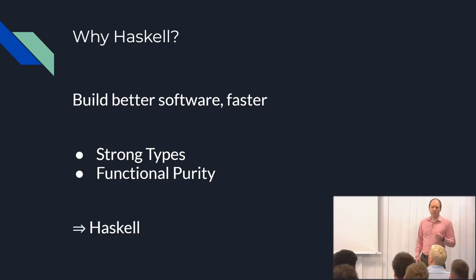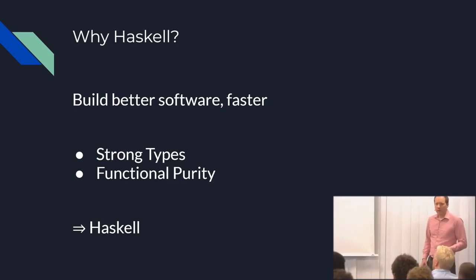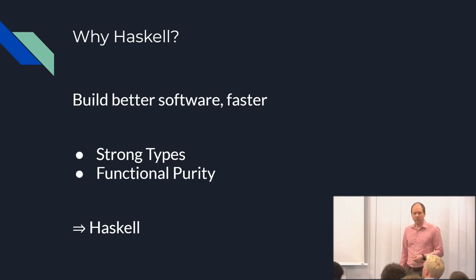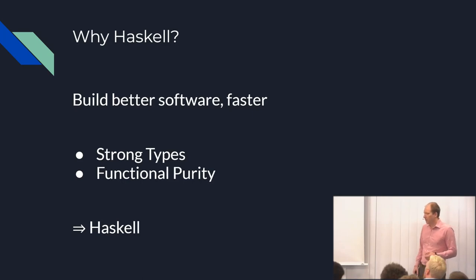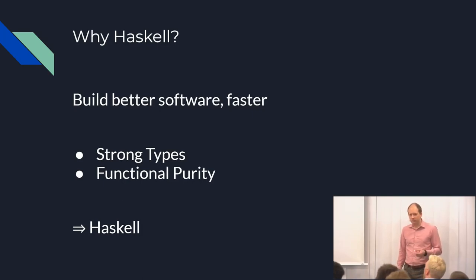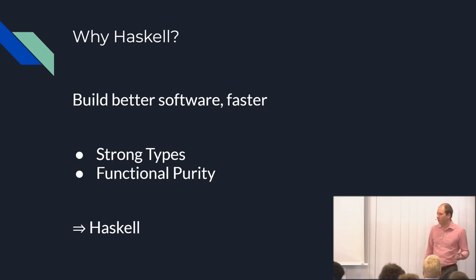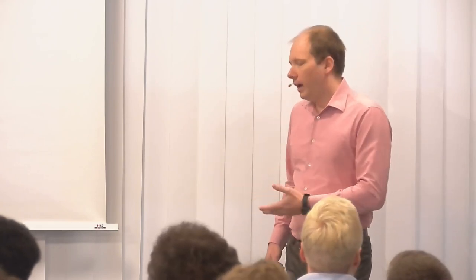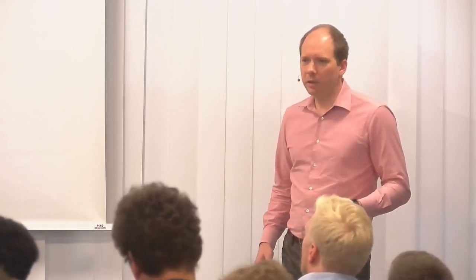Out of all the programming languages that are ready for production, practically applicable in industry, and general purpose, Haskell is really the only one that has both a strong type system and functional purity. You have many languages with strong types, though not many as strong or flexible as Haskell, and you really don't see many languages that truly have functional purity. SQL is actually the one with the most use that has functional purity, but obviously that's not general purpose. So when I look for a tool to write frontends or anything else, I tend to look at Haskell as my go-to.